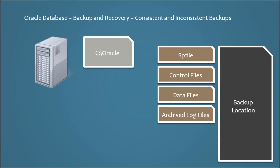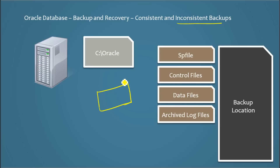Now let's talk about inconsistent backups. This is commonly used in almost all environments where the database is running and yet we take a backup in a way that we should be able to reconstruct from the backup if needed with consistency. So how is that possible — taking an inconsistent backup and getting a consistent copy out of it?